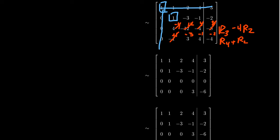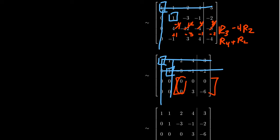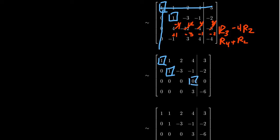Looking for the next pivot, we ignore rows and columns that already have pivots. The remaining submatrix has a first column of zeros, so we move to the next column. Our next pivot position is at the 3-4 position, but we need something non-zero there. So we interchange rows 3 and 4. This automatically puts the row of zeros at the bottom, which is expected when working these exercises.